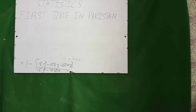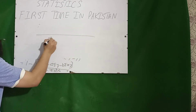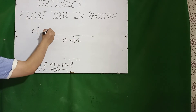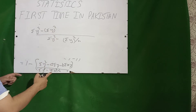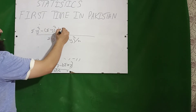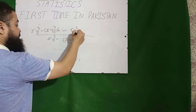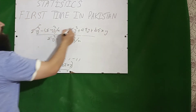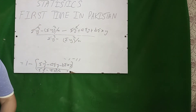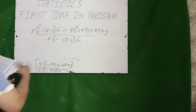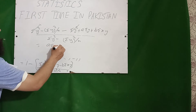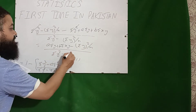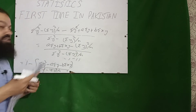Now I will take the LCM. The LCM will be Σy² − (Σy)²/n. After simplification, the terms cancel and the final answer will be: [aΣy + bΣxy − (Σy)²/n] divided by [Σy² − (Σy)²/n]. This question can be asked in every written test of statistics.